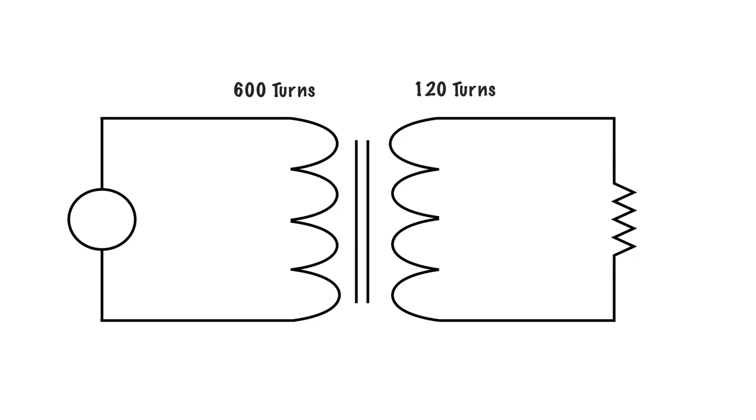So what we need to do is figure out what our turns ratio is. And the easiest way to do that is just take the higher number and divide it by the lower number. Always the higher number divided by the lower number. It doesn't matter if it's step-up or step-down.